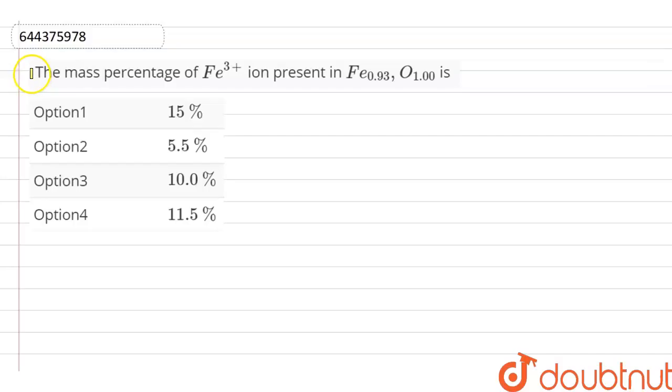Here is a question in which the mass percentage of Fe3+ ions present in Fe0.93O1.0 is option first 15%, option second 5.5%, option third 10% and option fourth 11.5%.